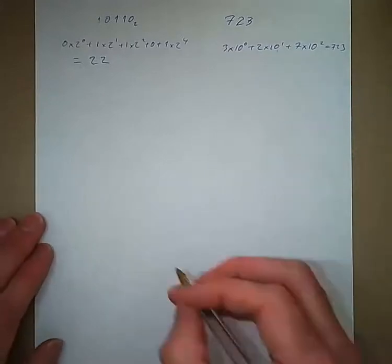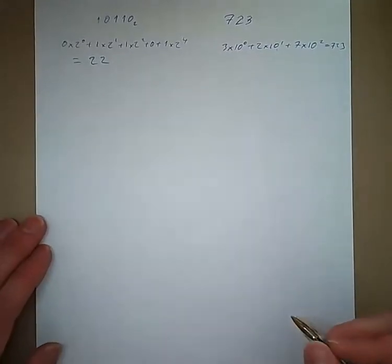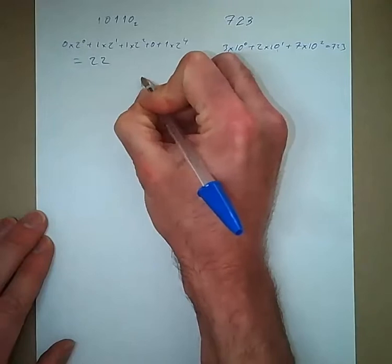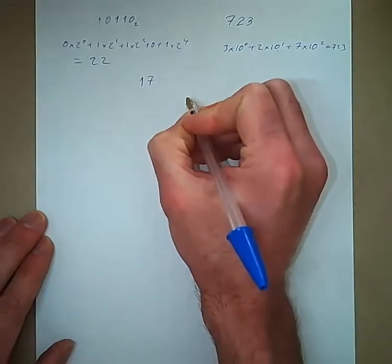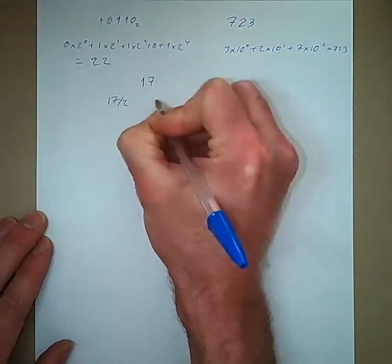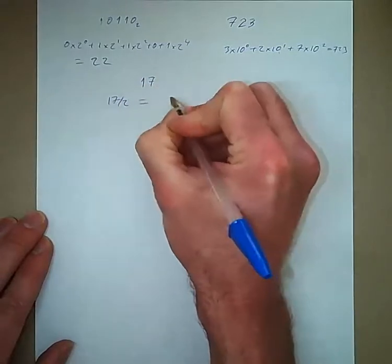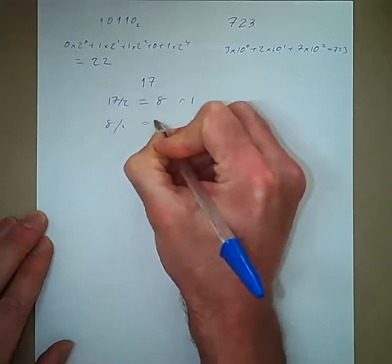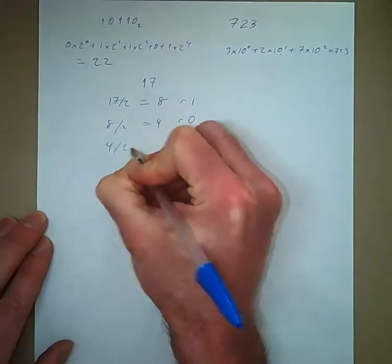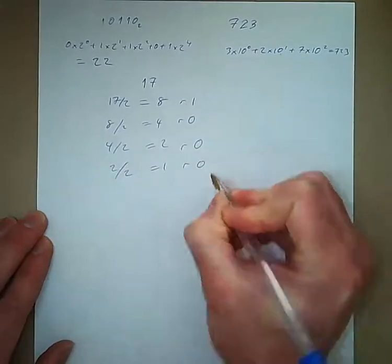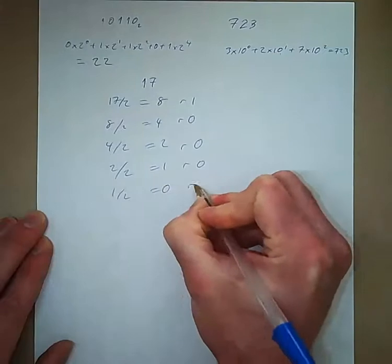Then to convert from decimal back to binary, we just perform a series of divisions by 2. For example, if we want to convert 17 to binary, then we would divide by 2. So 17 over 2, and we keep track of the remainders. This is equal to 8 with a remainder of 1. Then 8 divided by 2 equals 4, the remainder is 0. 4 over 2, 2 remainder is 0. 2 over 2, 1 remainder is 0. And 1 over 2 is 0 with a remainder of 1.